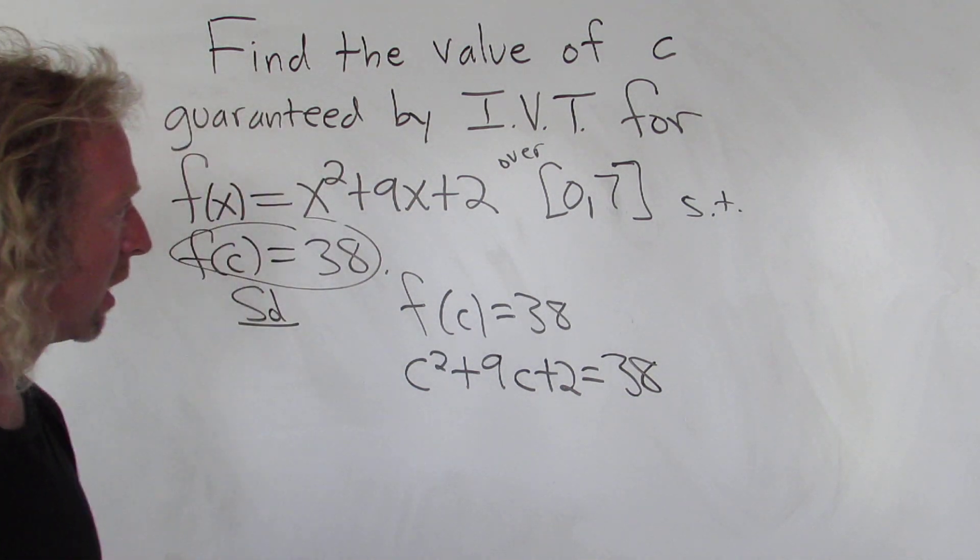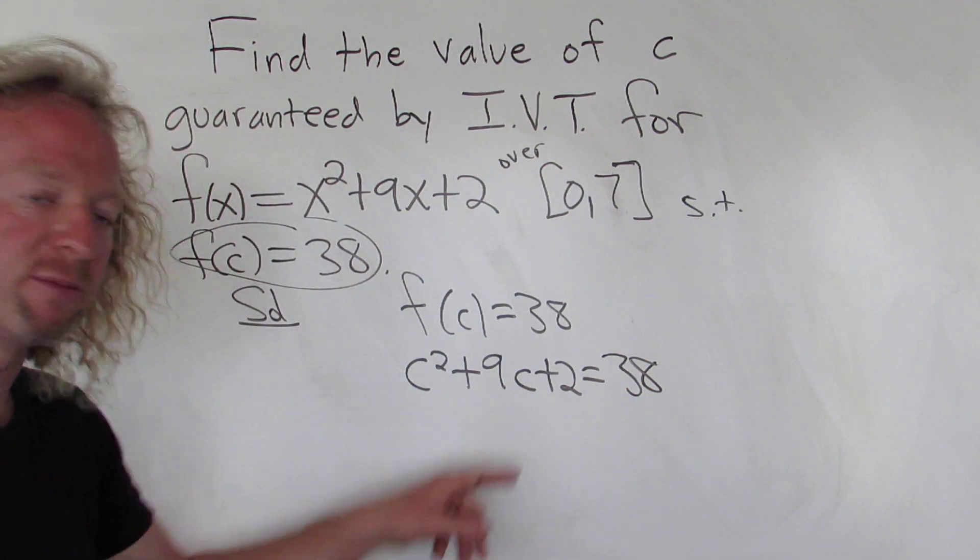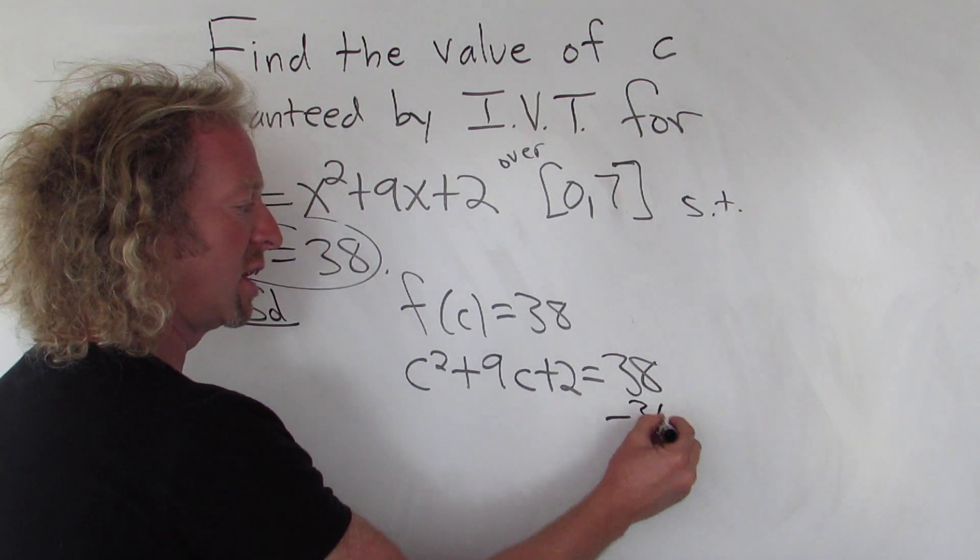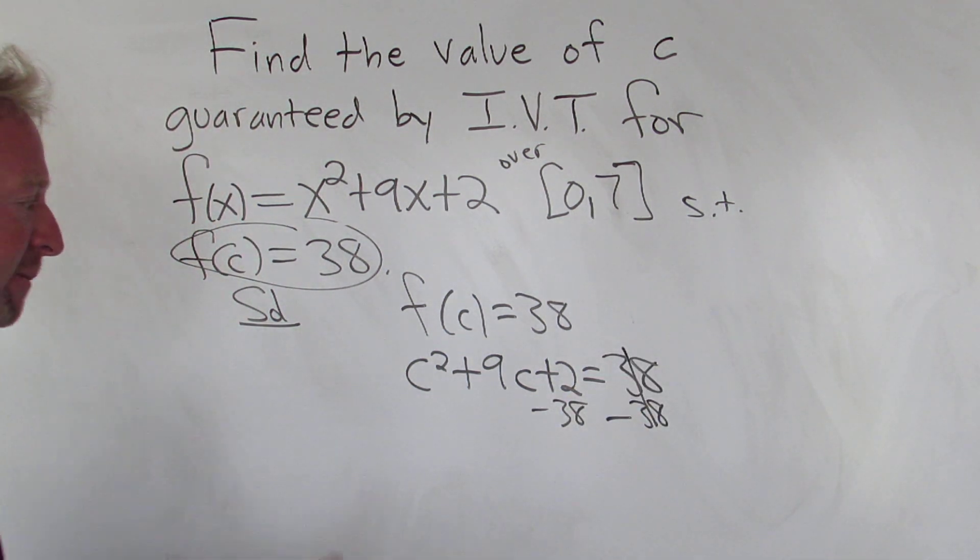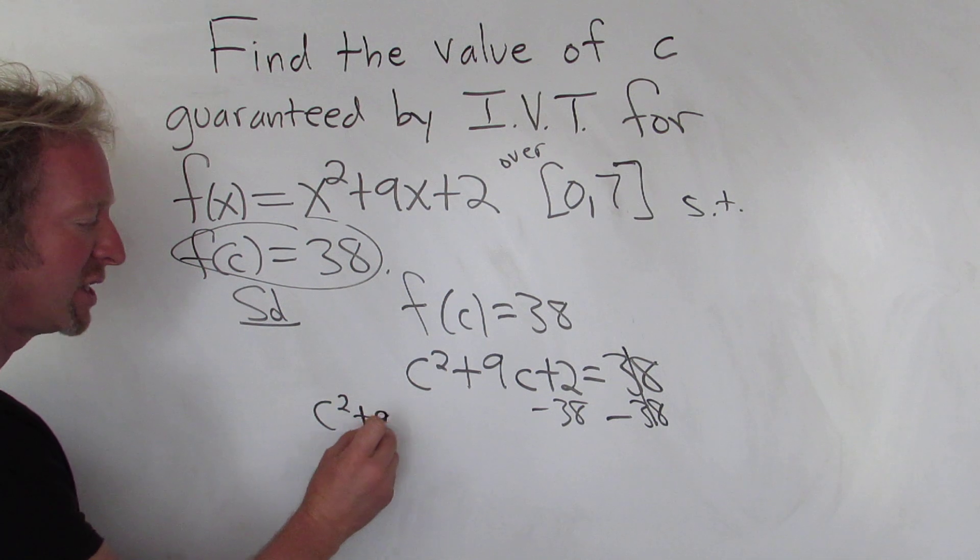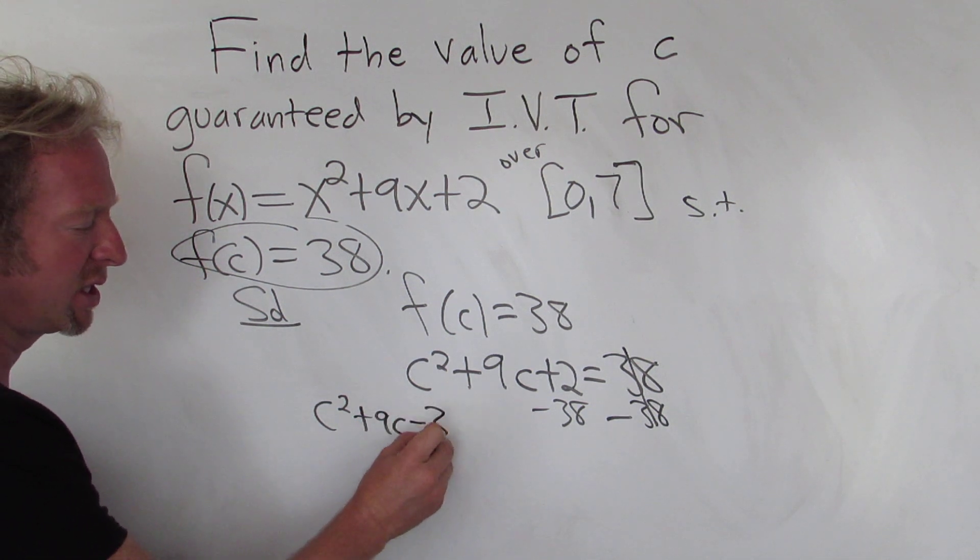Now we just have to solve this for c. So I guess we'll subtract 38 from both sides. So minus 38, minus 38. Boom. So we get c squared plus 9c minus 36 equals 0.